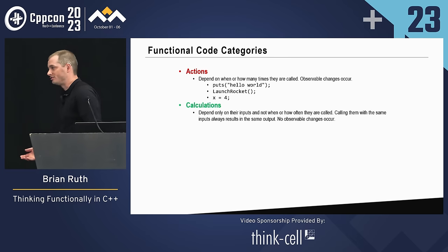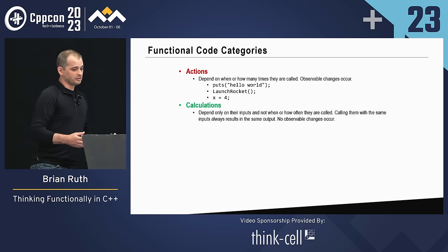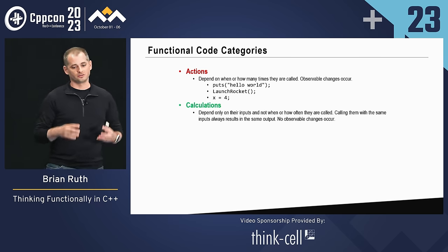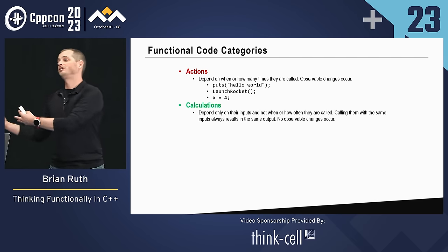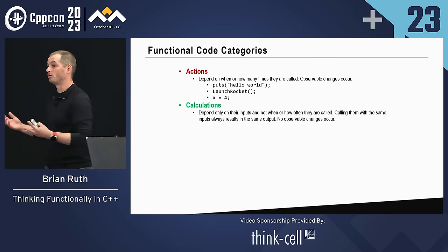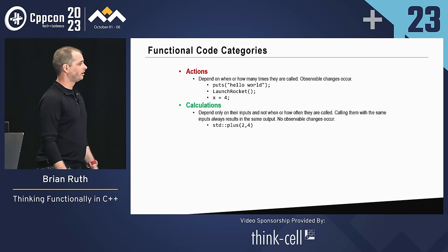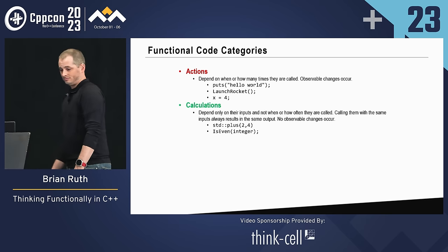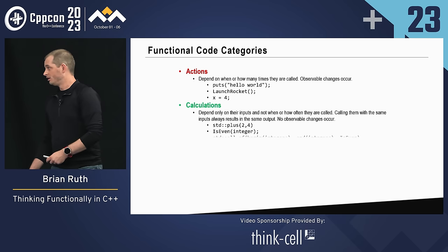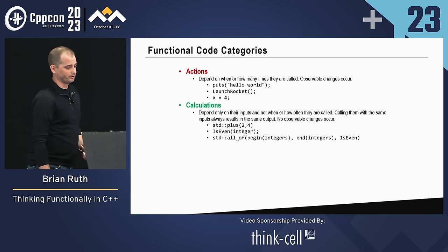The next broad category is calculations. In functional parlance, these would be considered pure functions. Calculations depend only on their input values and do not depend on how often or when they're called — for the same given set of input values, you will always get the same value back, and no observable changes outside of the calculation will occur. Example: std::plus — every single time you pass in two and four, you get six back. is_even_integer: for any given integer value, you will always get back the same value.